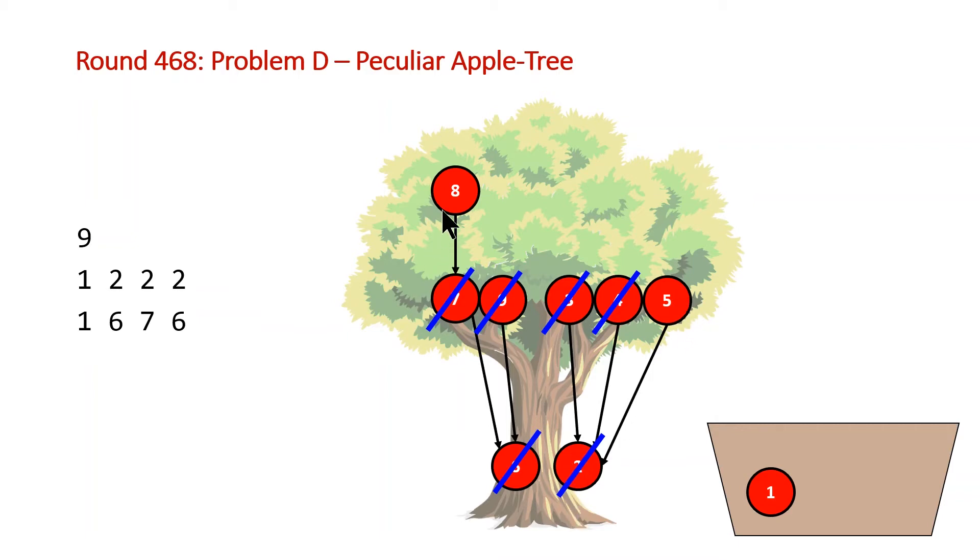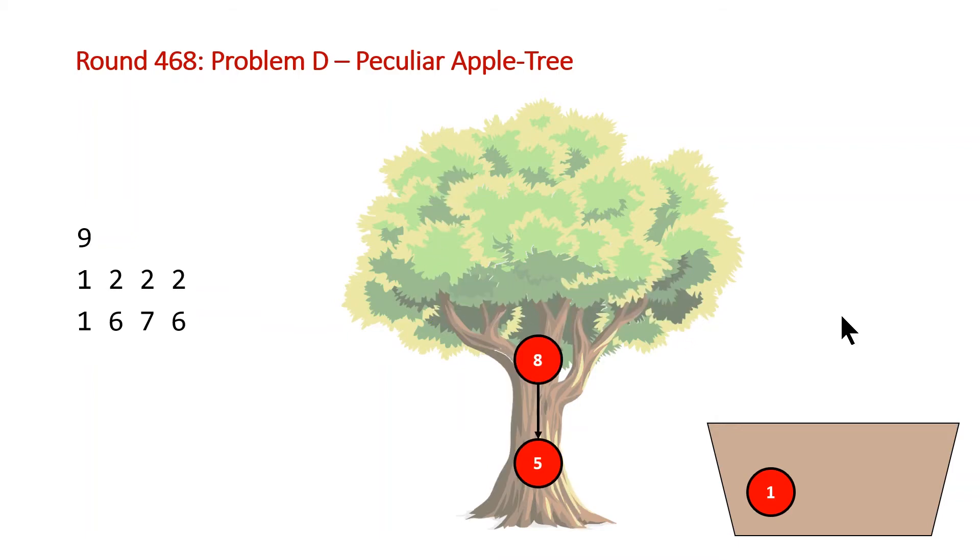So at this point five is going to drop down to the base and then eight is going to drop down to this level. And from here we're going to see that there aren't going to be any more collisions so we can throw both apple five and apple eight in our bucket. So once again the solution to this input is also going to be three.